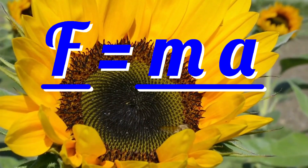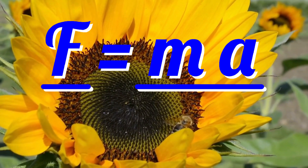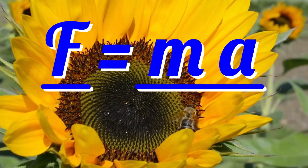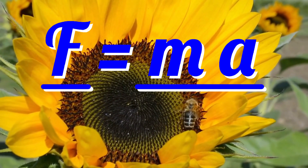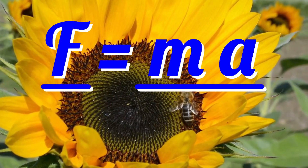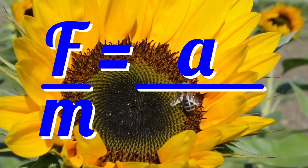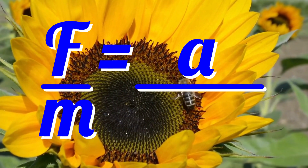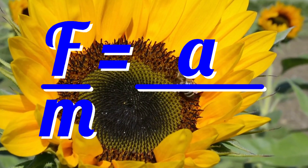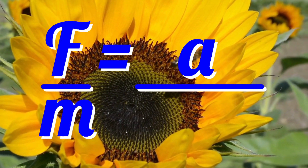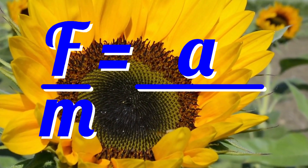To make the acceleration the subject of the equation, if you know the force and the mass, divide through by mass. That is, move the M under the F. F over M equals A — force divided by mass equals acceleration.